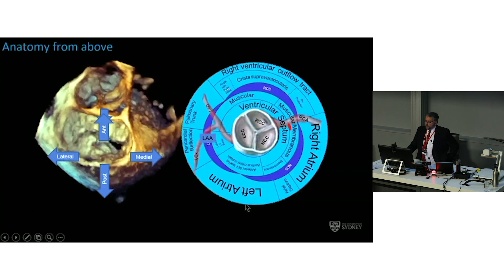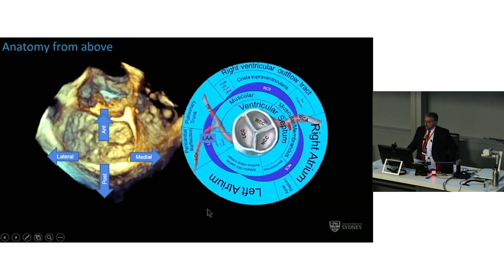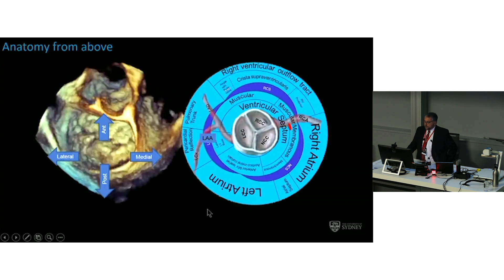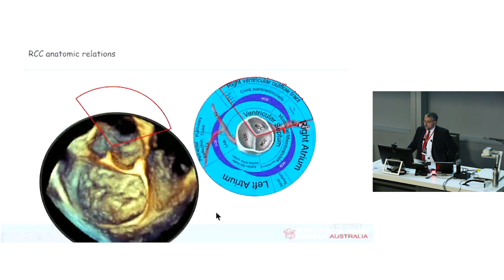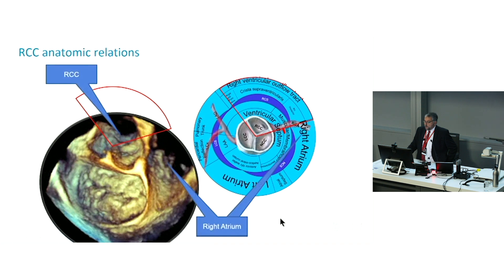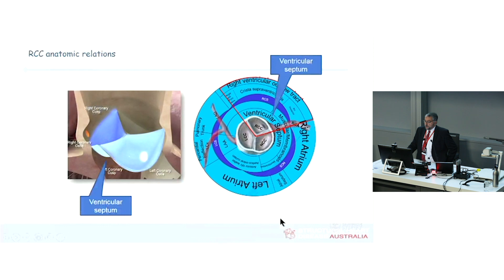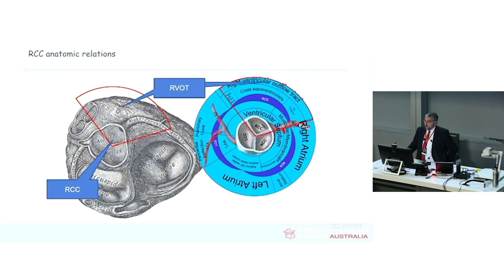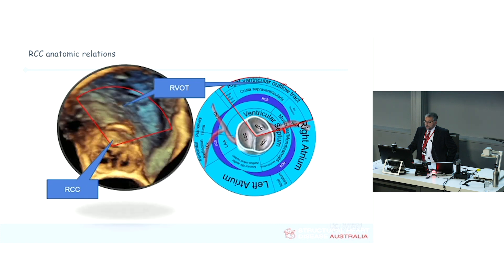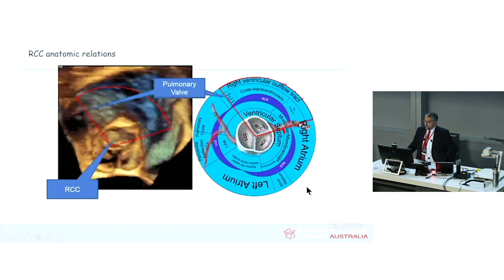The aorticomitral curtain is attached to the posterior portion of the aortic root. The right coronary cusp is near the right ventricular outflow tract — in fact, it's wrapped by the RVOT. It goes from the right atrium all the way around, formed with the ventricular septum, through the right ventricular outflow tract to the pulmonary valve. So if you can see the RVOT, you're at the right coronary cusp.